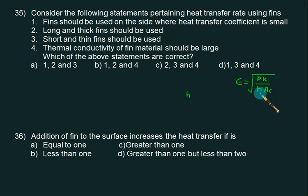Long and thick fins are not a good idea, rather short and thin fins should be used, so two is wrong. Three is correct. Since effectiveness is directly proportional to K, we should select K as high as possible, so fourth is correct. This means that choice D is correct.